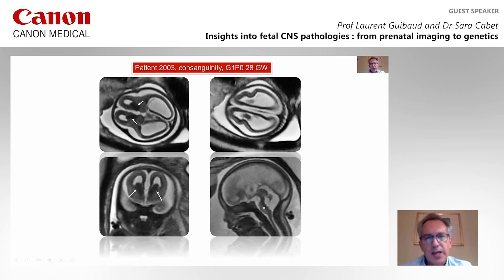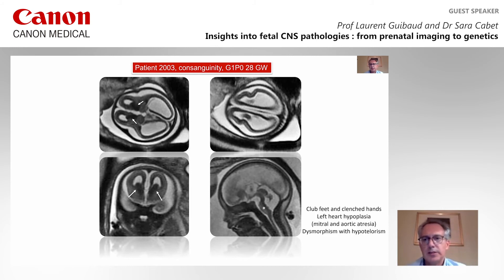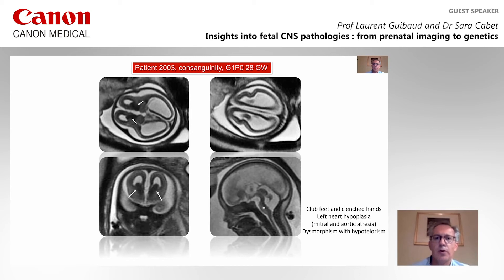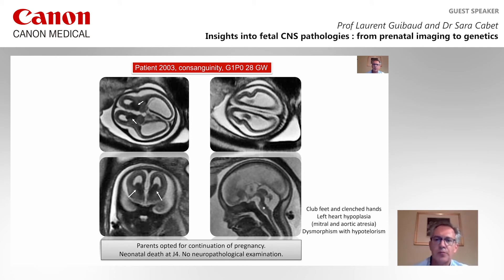When I saw this case in 2015, it reminded me of a case from 2003, and we had encountered another similar case. Comparing the two from different families, they share the same brainstem dysgenesis with these elongated pons. This case was associated with club foot and clenched hands, and also left heart hypoplasia related to mitral and aortic atresia, with dysmorphism including hypertelorism. The parents opted for continuation of pregnancy, and there was a neonatal death at day 4, with no neuropathological examination performed per the parents' wishes.